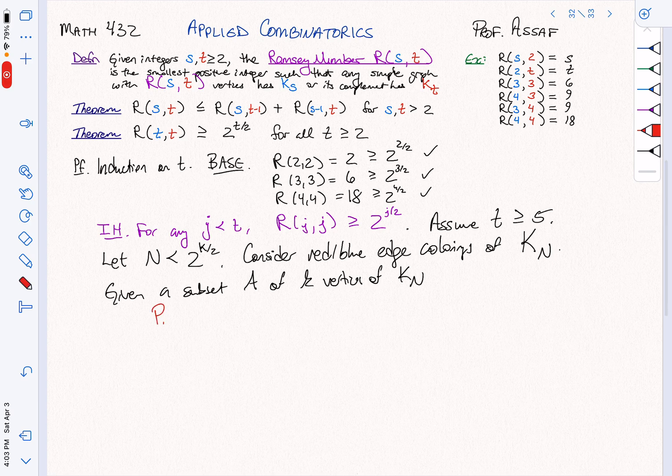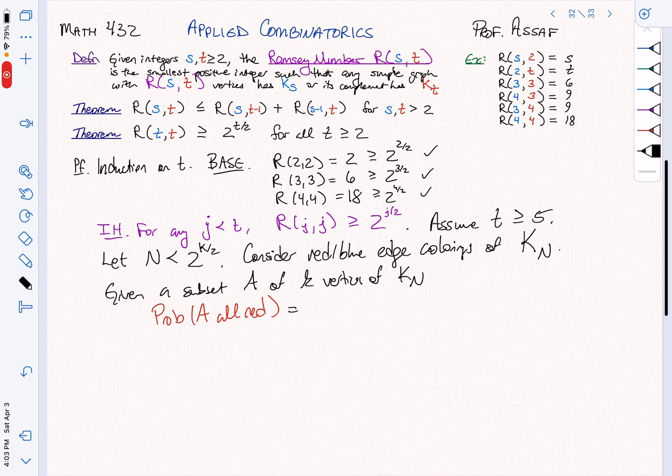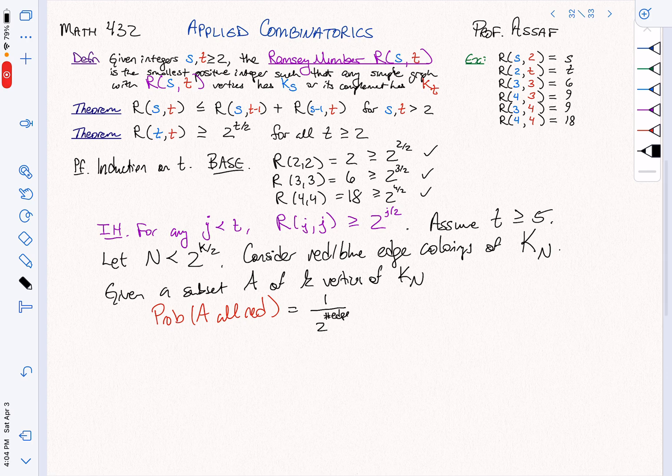Given a subset A of K vertices of K_N, we want to compute, what is the probability that A is all red? Well, we can think that there's one half chance that any given edge is colored red. So we can think of this as one half to the number of edges.